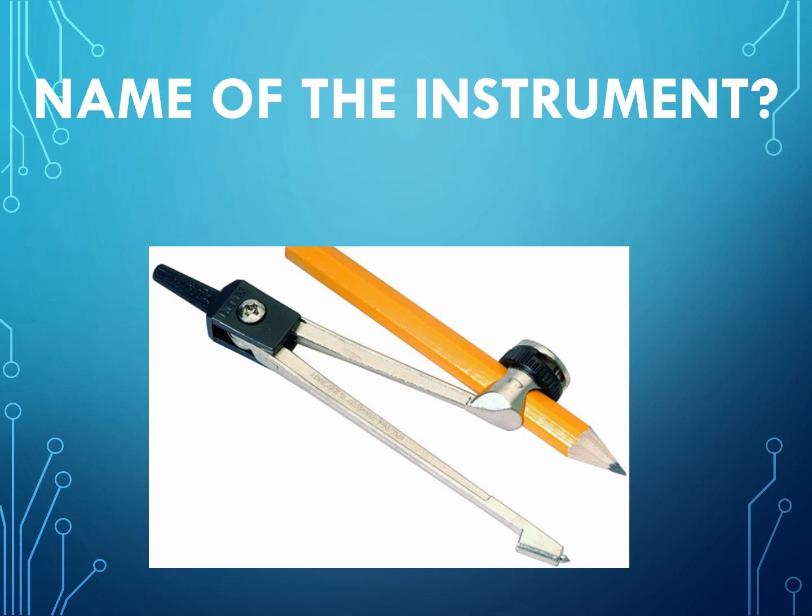Some students feel this is a very easy topic - oh, I can score full marks from the topic construction. So what is the name of this instrument? The name of the instrument is compass. In this picture we can see compass with pencil.